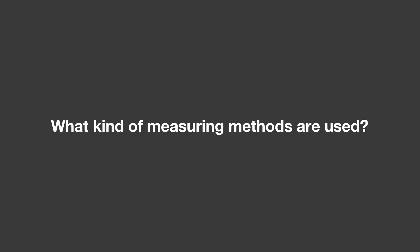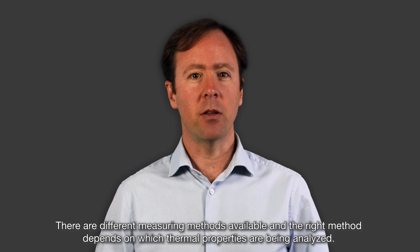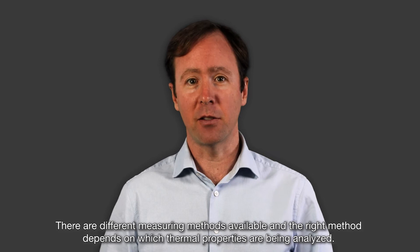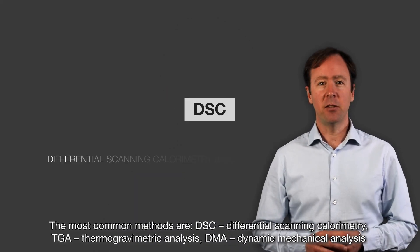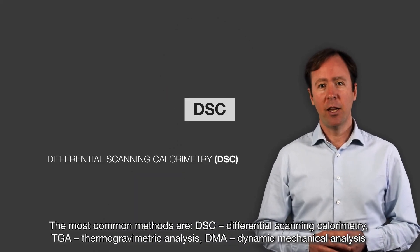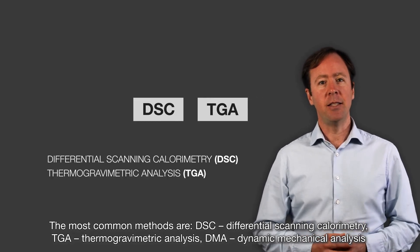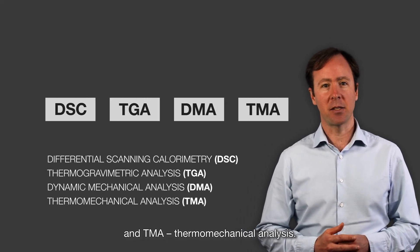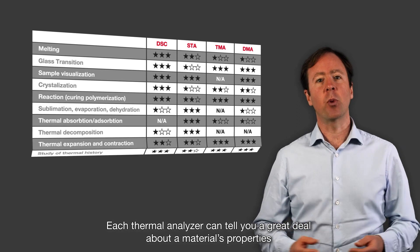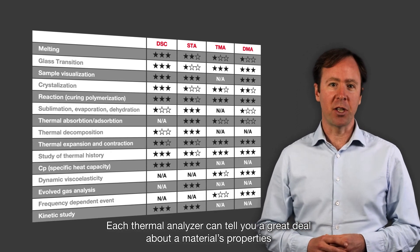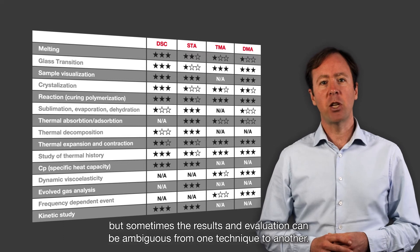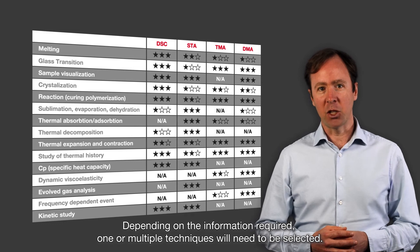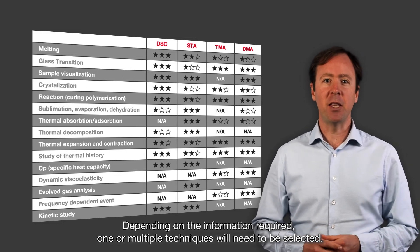What kind of measuring methods are used? There are different measuring methods available and the right method depends on which thermal properties are being analyzed. The most common methods are DSC differential scanning calorimetry, TGA thermal gravimetric analysis, DMA dynamic mechanical analysis, and TMA thermal mechanical analysis. Each thermal analyzer can tell you a great deal about your material's properties, but sometimes the result and evaluation can be ambiguous from one technique to the other. Depending on the information required, one or multiple techniques will need to be selected.